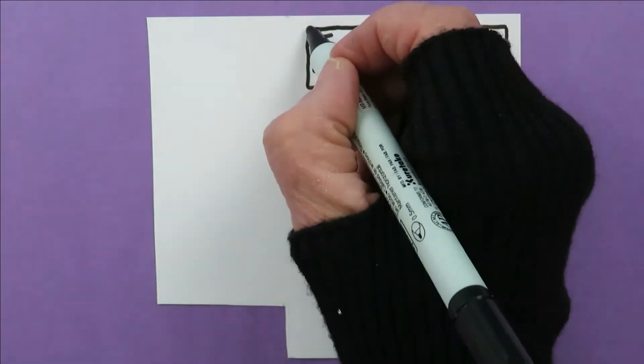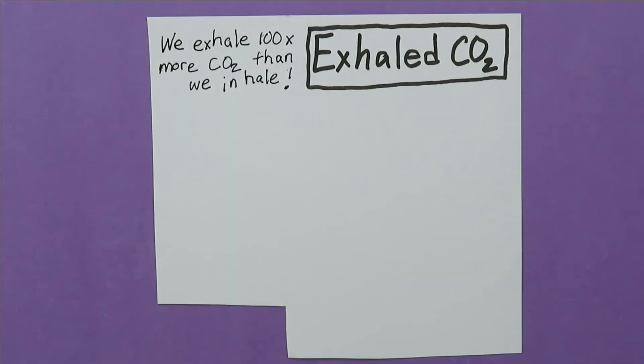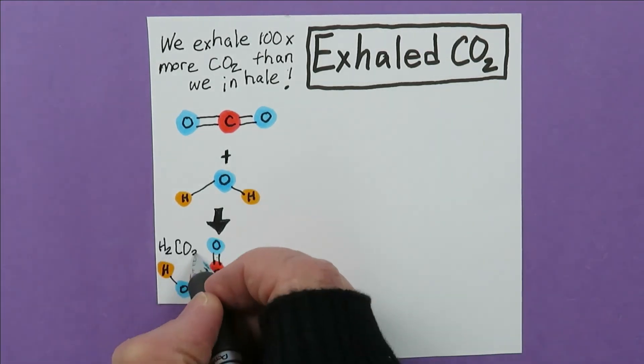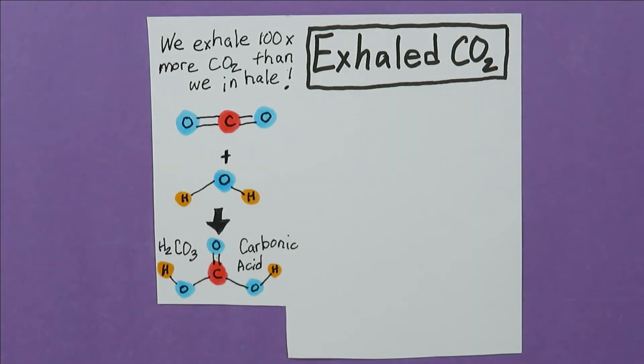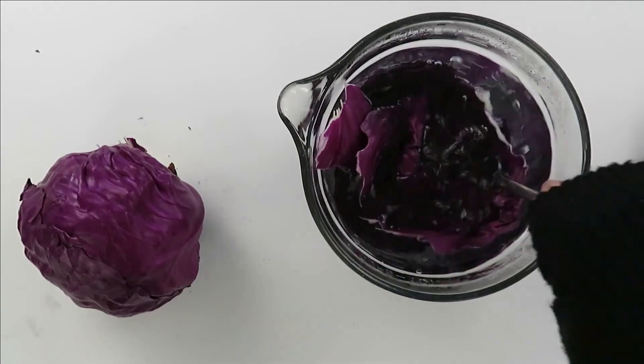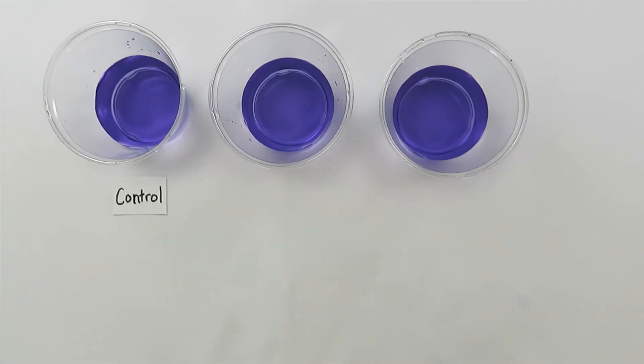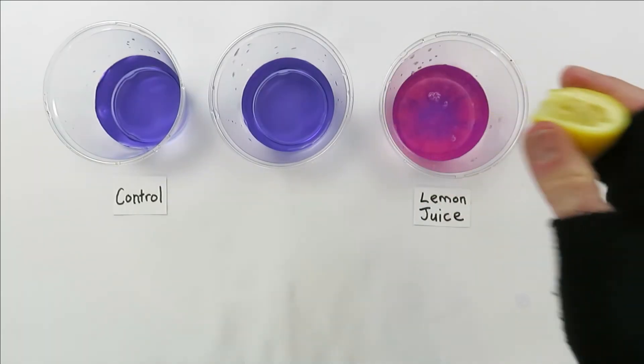You exhale about 100 times more CO2 than you inhale. It's enough to see in this experiment. First, you need to know that CO2 in water can form a weak acid, carbonic acid. Second, you need to know that it's easy to make an acid indicator that turns red in the presence of acid. Put three big red cabbage leaves in three cups of boiled water. Let it cool.